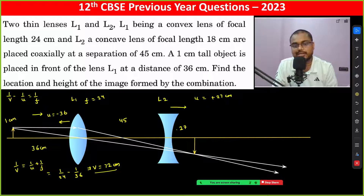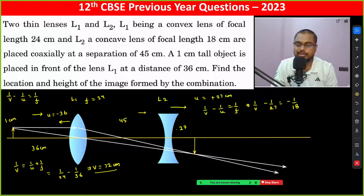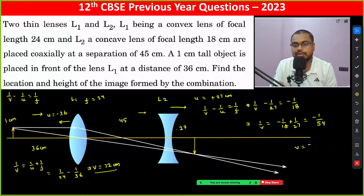For the second refraction, 1/v minus 1/u equals 1/f. So 1/v minus 1/27 equals minus 1/18, because for a concave lens the focal length is negative. Therefore, 1/v equals minus 1/18 plus 1/27, which equals minus 1/54. So v is minus 54 centimeters.